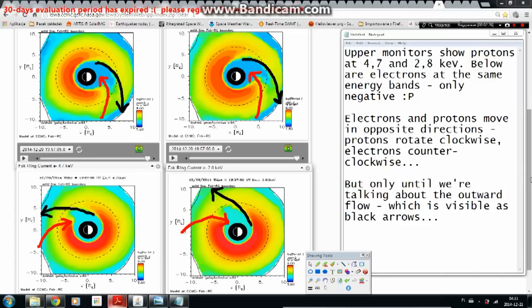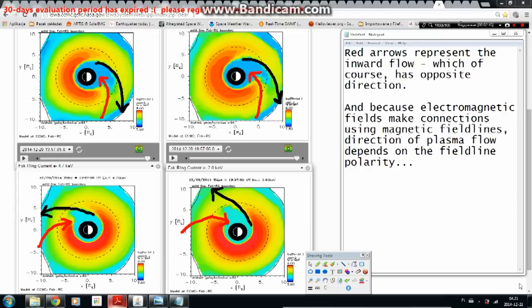Electrons and protons move in opposite directions. Protons rotate clockwise, electrons counter clockwise. But only until we're talking about the outward flow, which is visible as black arrows. Red arrows represent the inward flow, which of course has opposite direction. And because electromagnetic fields make connections using magnetic field lines, direction of plasma flow depends on the field line polarity.